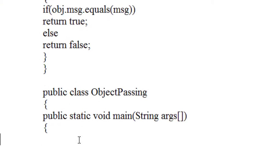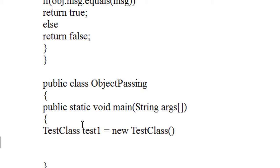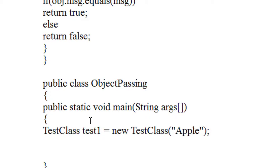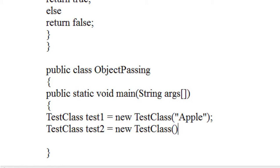Now I am going to create two objects of the class called TestClass. TestClass test1 is equal to new TestClass — I just pass a string here, I pass apple. Again I am going to create another object of the same class: TestClass test2 is equal to new TestClass, and I give it as orange.